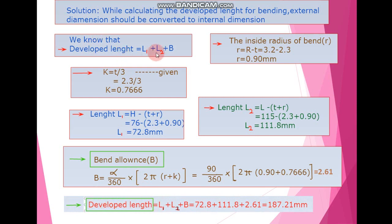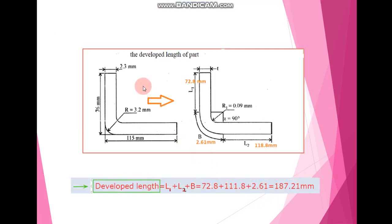Finally, we calculate the developed length using the formula L1 plus L2 plus B. After putting in all the values of L1, L2, and B, we get the developed length equal to 187.21 mm.